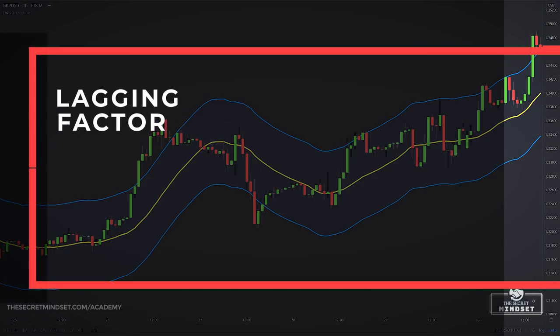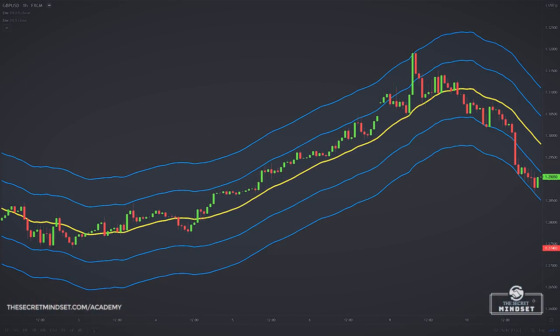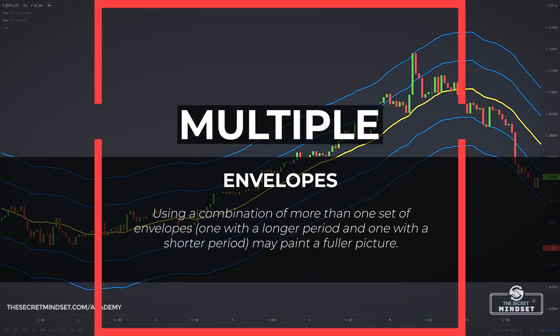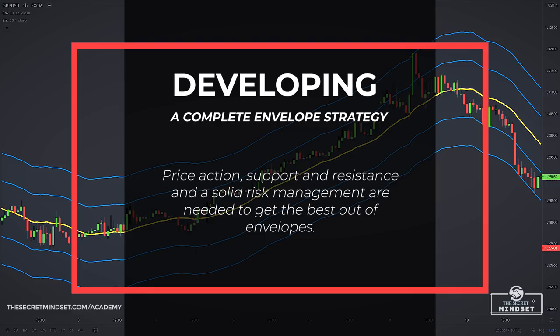Remember that moving averages are lagging indicators, because the price data always incorporates periods of the past, so the inflections in the market's direction will always be reflected more slowly by a moving average rather than by the price itself. How much more slowly is a function of the size of the period you choose. In some cases, you may find that using a combination of more than one set of envelopes — say one with a longer period and one with a shorter period — may paint a fuller picture. The best way to establish what works with your own trading style is to backtest different periods in different time frames. Building a complete envelope strategy is not just about signals informing you when to buy or sell — envelopes are just a part of the full story. Price action, support and resistance, and solid risk management are also needed to get the best out of envelopes.